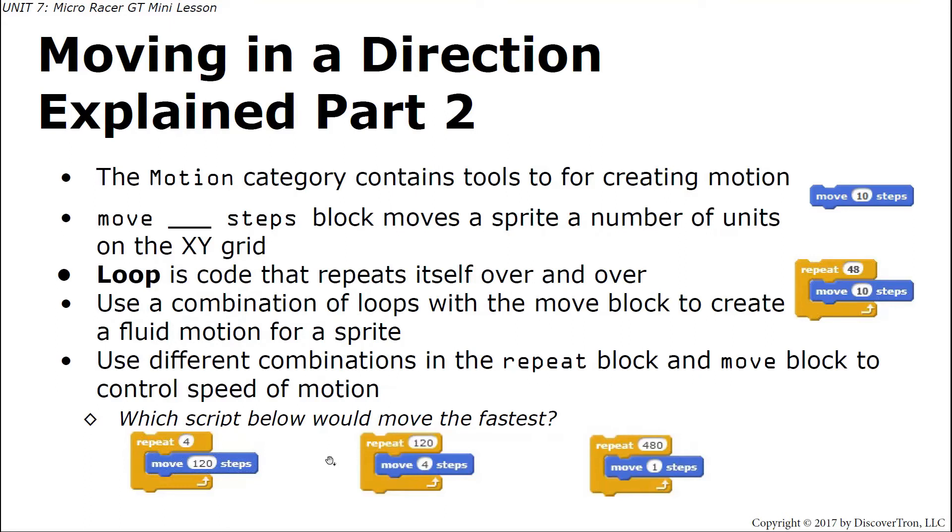We can use the repeat blocks and the move blocks in different combinations to create movements that go at different rates or speeds. For example, this sprite with this block would repeat itself 4 times and move 120 steps. That would be very fast because every time the computer went through this four times it would move 120 steps, which is a total of 480 units. Over here the computer would have to go through this 120 times moving at 4 steps per loop to go 480 units. This is a little bit slower. This one would have to go 480 times one step per loop to get to 480. So this would move the slowest.